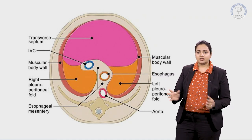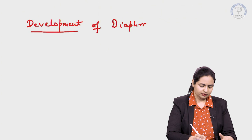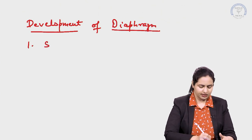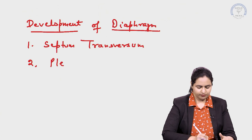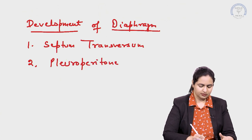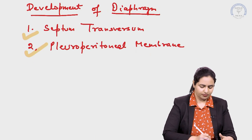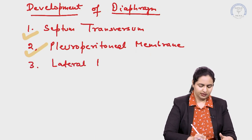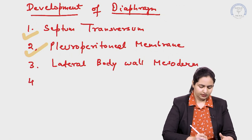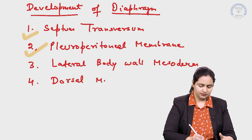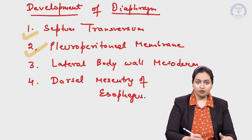All these structures together are contributing to the development of the diaphragm. The two major structures are septum transversum and pleuroperitoneal membrane. Apart from these, we have lateral body wall mesoderm and the dorsal mesentery of esophagus. So these are the structures leading to the formation of the diaphragm.